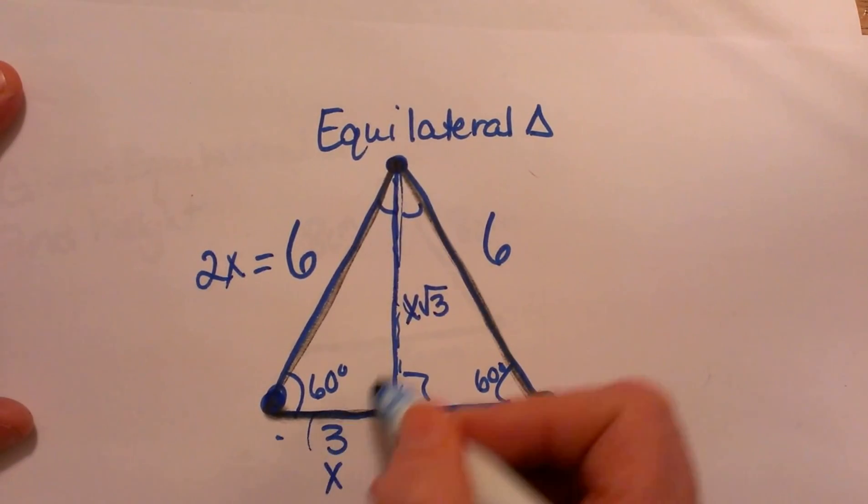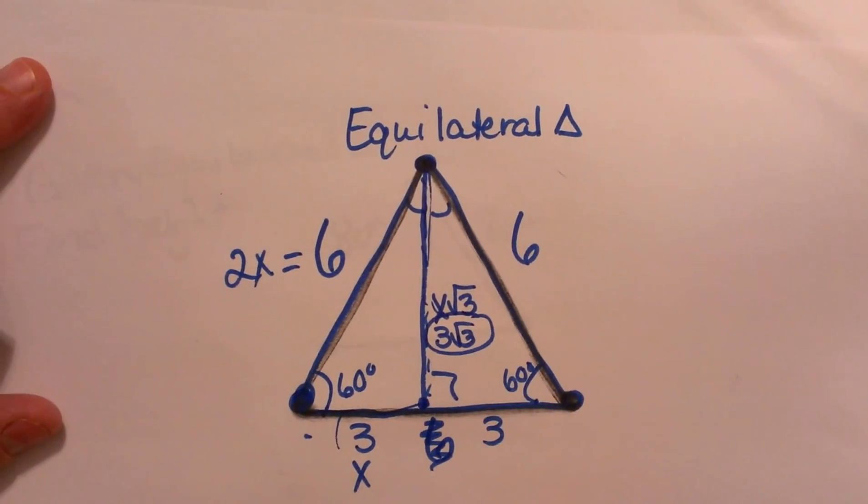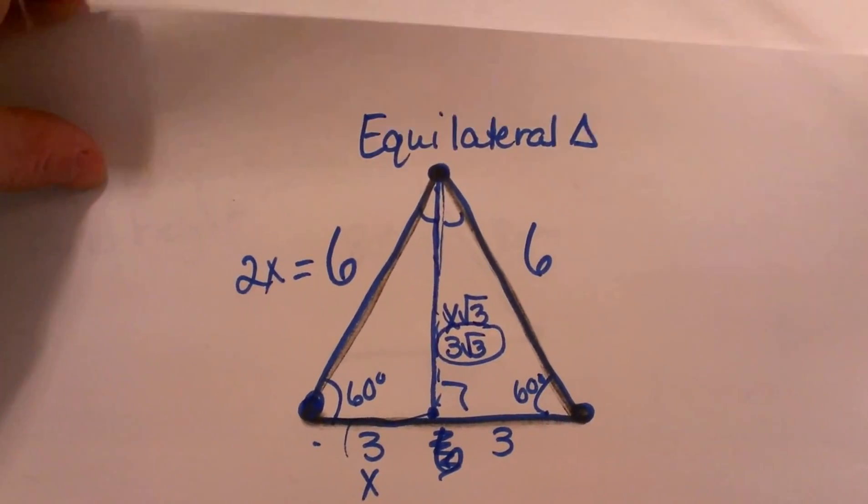So since our x is 3, our height is 3 square root of 3, and that is how you find the height. So let's do one more like that.